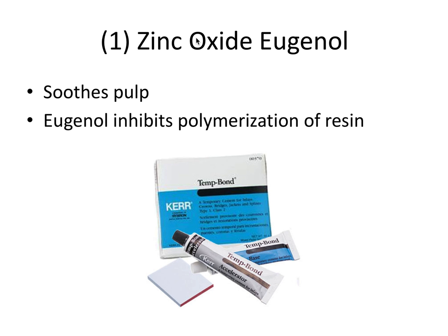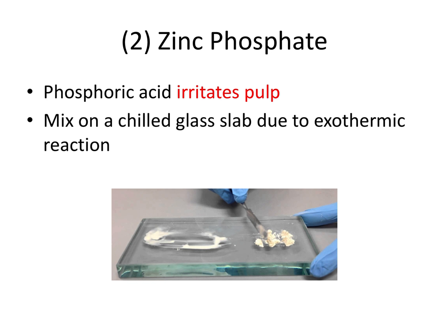Provisional or temporary cements like zinc oxide eugenol have this eugenol component, which inhibits the polymerization of resin. So we need to remove as much as possible with an excavator, explorer, or wet cotton pellet after taking the provisional crown off before proceeding to a permanent cement, particularly if that cement contains resin. TempBond is one of the commercial examples of a zinc oxide eugenol temporary cement.